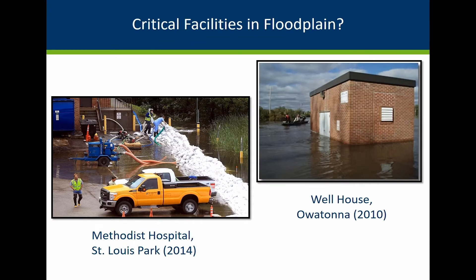Review where your critical facilities are located and whether they are at higher risk for flooding. Those include public utilities, like a wellhouse. The entire community will be affected if your water or wastewater plants or power stations or other utilities have to shut down during a flood. Even if just a few homes and businesses are directly damaged, businesses and schools and the whole community will be impacted if key services shut down. Other critical facilities include hospitals, schools, nursing homes, your fire station, and other key public facilities.